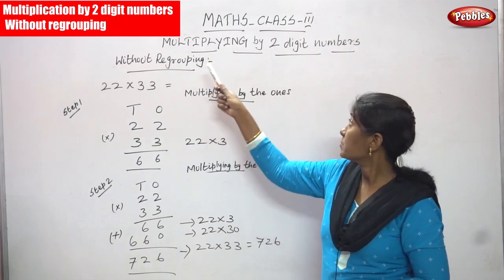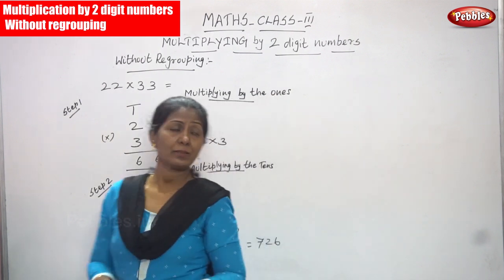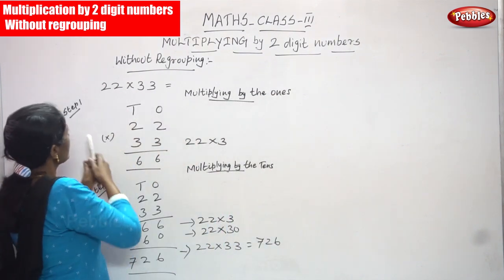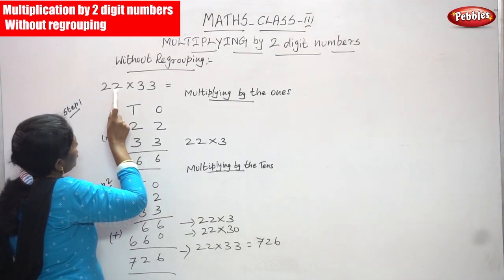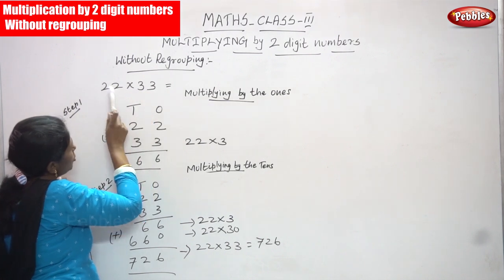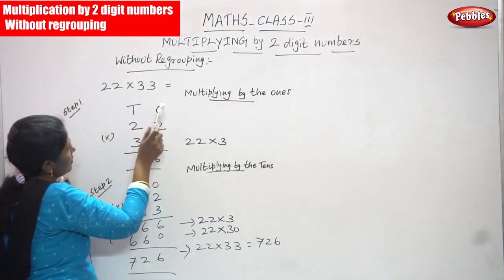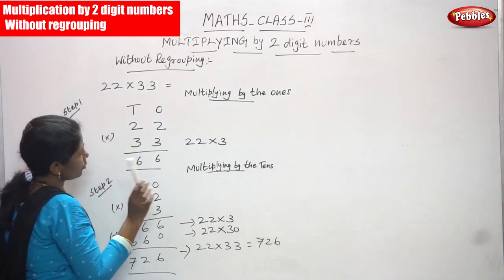Now we are going to see multiplying by two digit numbers without regrouping. Look at this number: 22 into 33. 1's, 10's, 1's, 10's. So 22 - that's 2 ones and 2 tens. And 33 - that's 3 ones and 3 tens. We are going to multiply these two digit numbers. First you have to write the place value in one sentence.